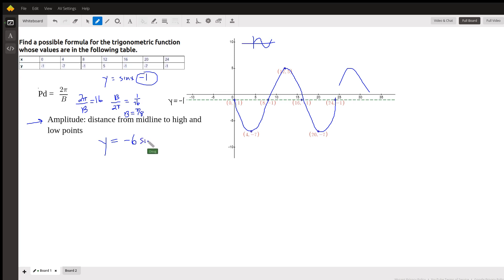Sine of b is π over 8, that's the coefficient of the x. There is no horizontal shift or phase shift. And finally, we have to move the midline down one. Okay, I think that's your equation right there. Let's check it out.